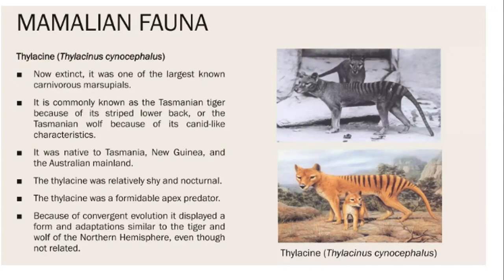The Thylacine is now extinct and was the largest known carnivorous marsupial. It was commonly known as the Tasmanian tiger due to its striped lower back, and the Tasmanian wolf due to its canine-like characteristics. Native to Tasmania, New Guinea, and Australia, it was a relatively shy and nocturnal apex predator. Due to convergent evolution, it displayed forms and adaptations similar to tigers and wolves of the northern hemisphere, even though it was not related to them.